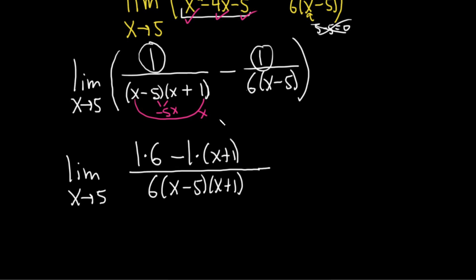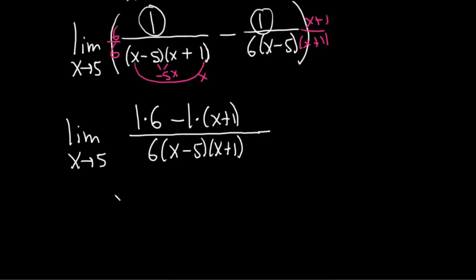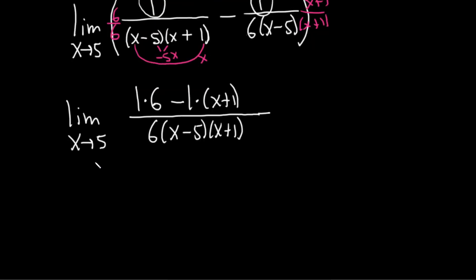Another way to do it would be to, in this case, multiply by 6 over 6. And in this case, multiply by x plus 1 over x plus 1, and then perform the subtraction. And you would get the same thing. You would get 6 minus x plus 1, which is what we have here. So multiple ways to do this problem.